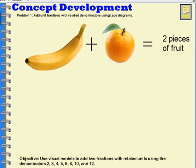The same holds true when we add fractions. We need our units to be the same when we add our fractions together. So, let's take one-third plus one-sixth as an example.